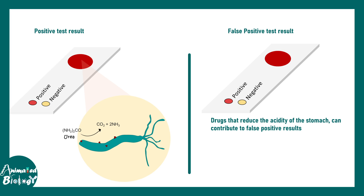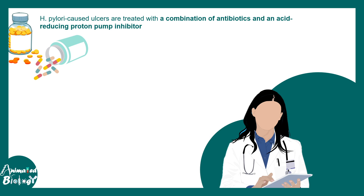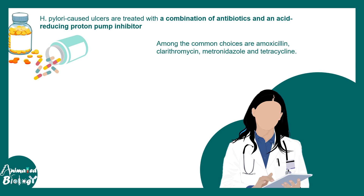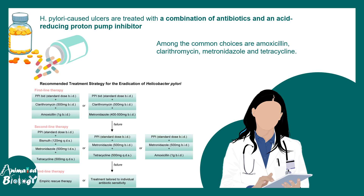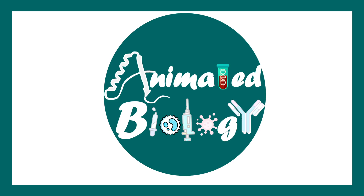H. pylori testing and treatment are really important to determine whether peptic or gastric ulcers are present. Treatment is critical; otherwise it can turn into chronic inflammation. There are tests that measure urease enzyme activity. H. pylori, the predominant cause of peptic ulcer disease, can be cured by combinatorial antibiotics such as amoxicillin and tetracycline, always prescribed in combination. There are first, second, and third line therapies, each combinatorial, and some work better for certain patients than others. Eradicating H. pylori is key to resolving peptic ulcer disease.